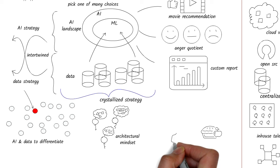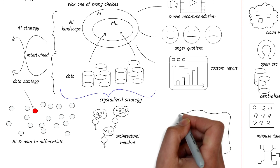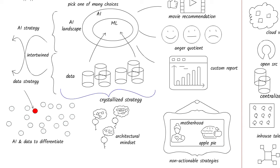Some organizations have motherhood and apple pie kind of statements that are supposed to be AI or data strategy. This is not strategy because no deliberate choices have been made. These are just corporate platitudes. Don't fall into that trap.